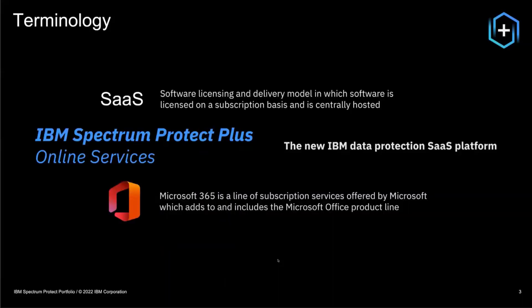SaaS means software as a service. It's typically a software licensing model where the software is maintained and hosted centrally, and the user just logs in and uses the software. There's no need to install something locally or to keep any infrastructure up and current on the customer side — this is all maintained from the provider of the SaaS software. IBM Spectrum Protect Plus Online Services is the new IBM Data Protection SaaS platform, used to protect Microsoft 365 workloads. Microsoft 365, as you probably know, is a subscription model of Microsoft that includes and adds to the Microsoft Office product line.